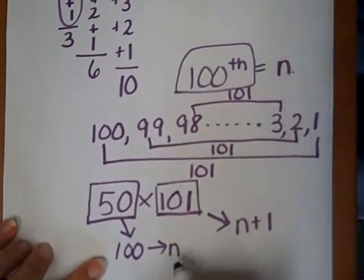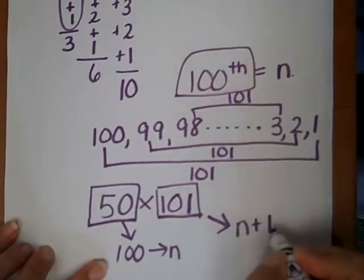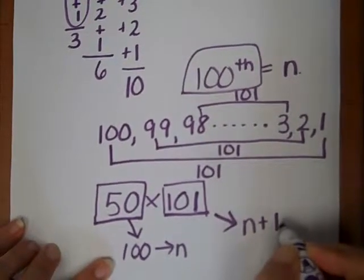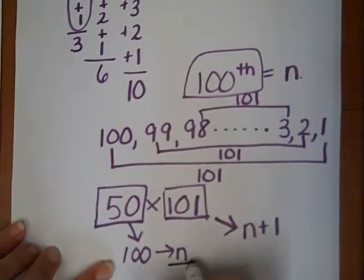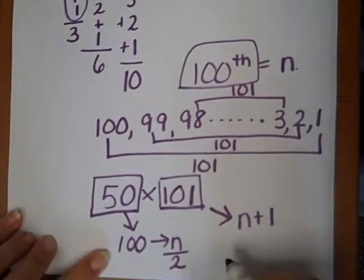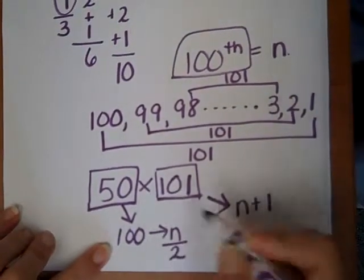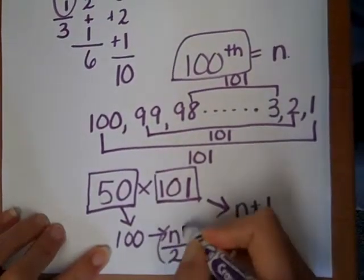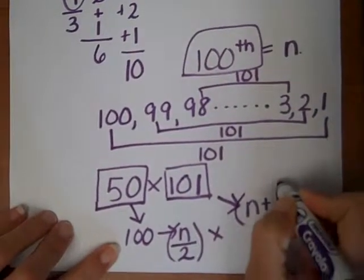So he noticed if you multiply n times n plus one, but in this case we only need fifty, so we only need half, so that would be n divided by two. Fifty would be n divided by two because one hundred divided by two is fifty. So now we are going to multiply n divided by two times n plus one.